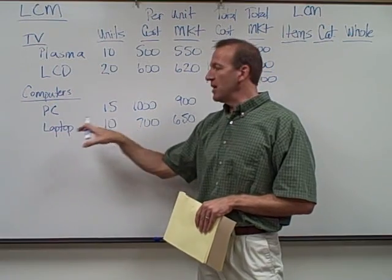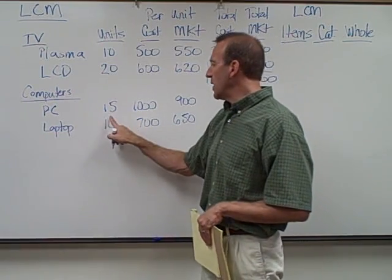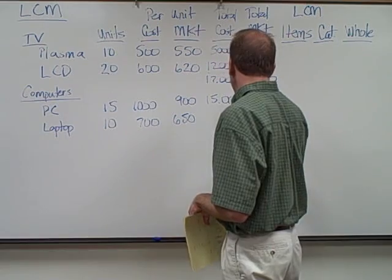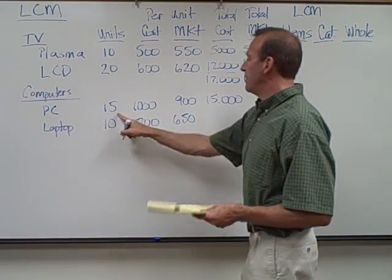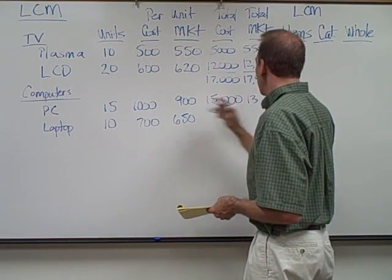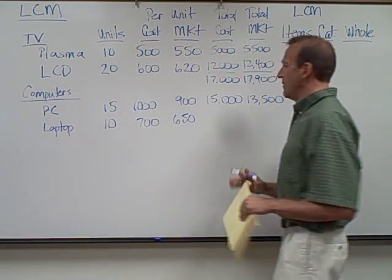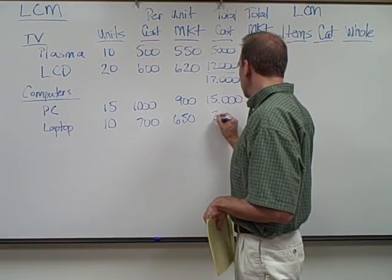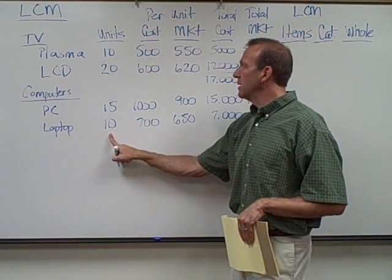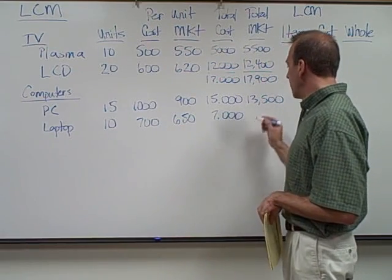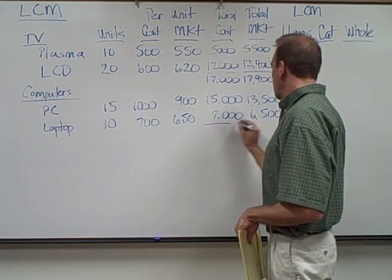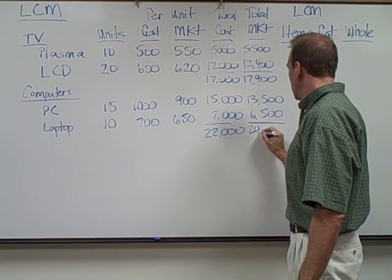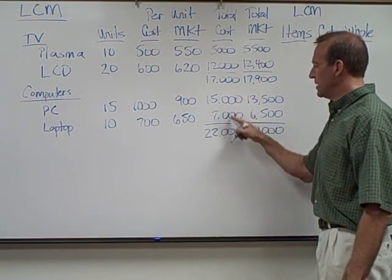Now we do the same with our next items and categories. PCs: 15 units times $1,000 gives a total cost of $15,000, and 15 times $900 gives a market value of $13,500. Laptops: 10 units times $700 gives a total cost of $7,000, and 10 times $650 gives a market value of $6,500.